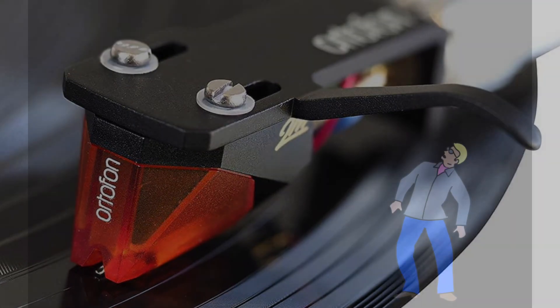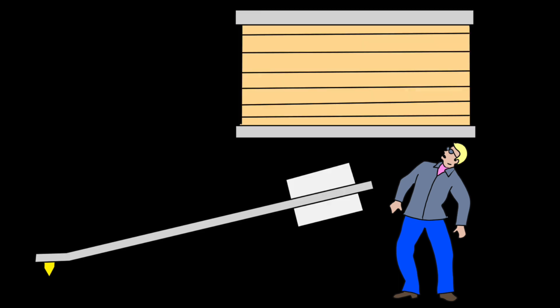Before the needle drops, all is quiet inside the cartridge. There's just the end of the cantilever, some coils, and a couple of magnets. But when that needle vibrates, the otherwise quiet little cartridge becomes an electromagnetic generator.